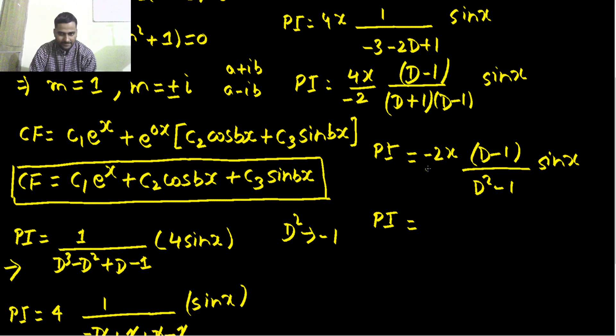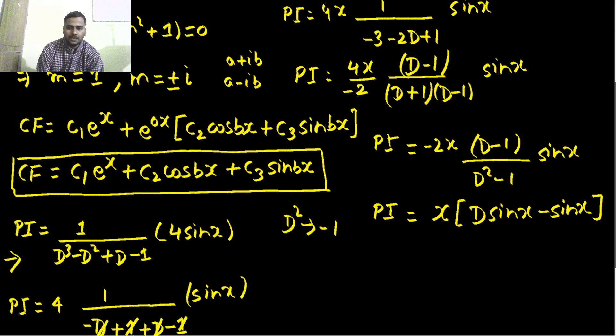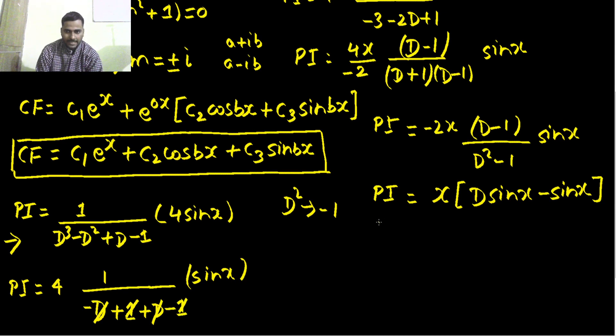-2 will get cancelled with this -2 so you get x outside and you are getting D - 1 operating on sin x so you can write that as D(sin x) - sin x. So this is what we are having now. Derivative of sin x is cos x, you are getting x cos x - sin x. This is your particular integral.